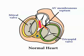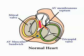Previously we had called this a muscular atrioventricular septum. Now we know it is really a sandwich of atrial myocardium separated from the ventricular mass by an upward continuation of the inferior atrioventricular groove.